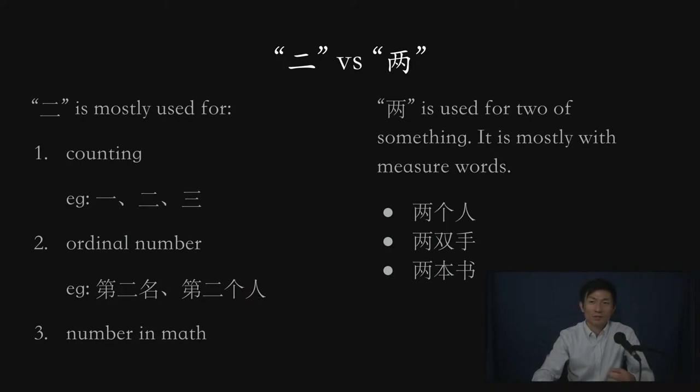For example, 第二名, the second place, or 第二个人, the second person, as opposed to 两个人, there will be two people. 第二个人, the second person.